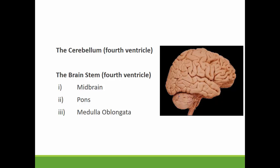The cerebellum, which is the part at the back that looks like a cauliflower. And the brainstem, which is made up of three distinct structures, including the midbrain, the pons, and the medulla oblongata.